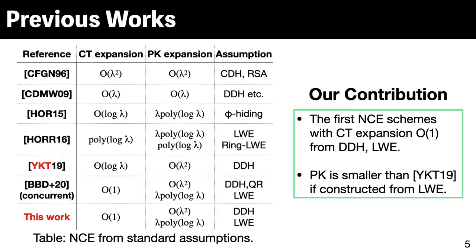This is a list of previous NCE schemes constructed based on standard assumptions. As you can see, ciphertext expansion has been getting better and better, and at last we achieved constant ciphertext expansion based on the DDH or LWE problem. We also show that when instantiated from LWE, the public key expansion is better than our DDH-based scheme.